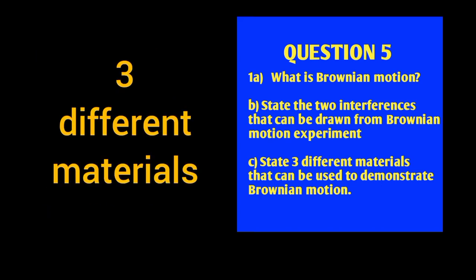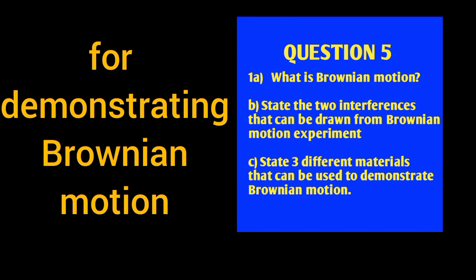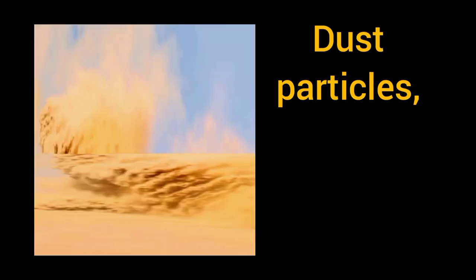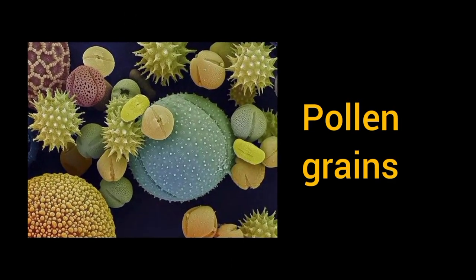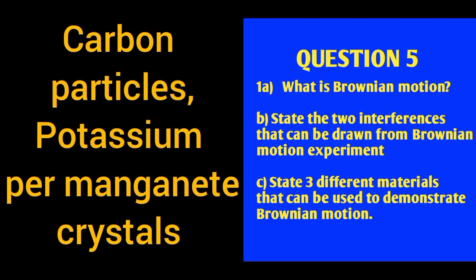Materials that can be used to demonstrate Brownian motion include: dust particles, chalk particles, smoke, pollen grains, carbon particles, and potassium permanganate crystals — all of these can be used to demonstrate Brownian motion.